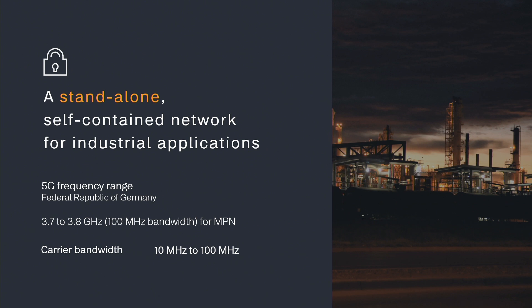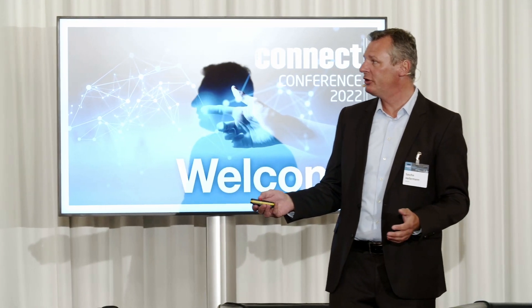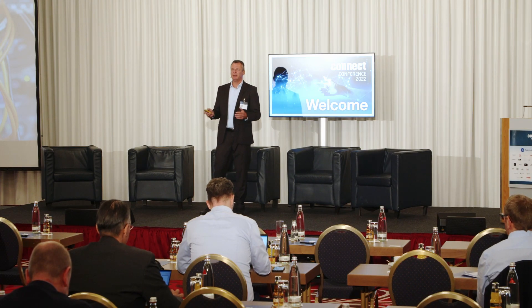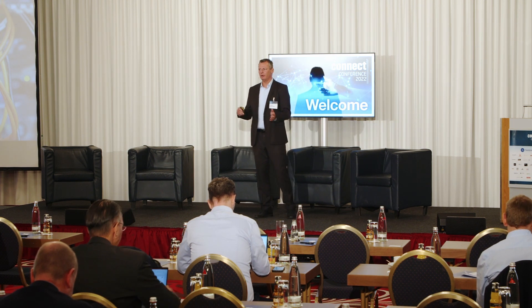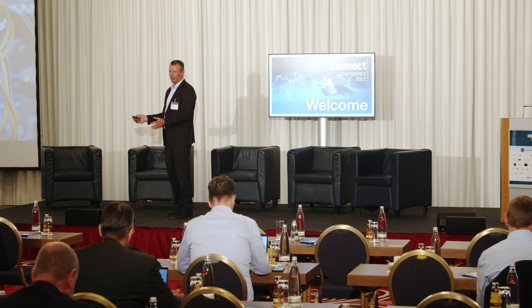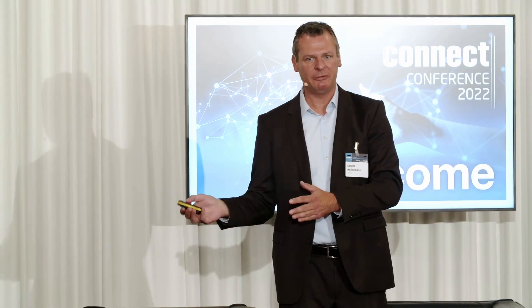In Germany it's 100 megahertz from 3.7 to 3.8 gigahertz, which can be used exclusively in a private manner on your own premises. Why should you implement your own private network? There are a lot of benefits over cable or Wi-Fi infrastructure for mobile use cases. 5G runs on a private frequency spectrum, so there are no interferences with other frequencies or providers — unlike Wi-Fi, which uses public frequencies that can be disturbed by other applications.